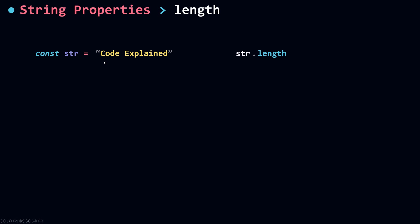The length property tells you how many characters are in your string. For example, counting the characters in this string gives us 14. So the length of the string here is 14. Simple.